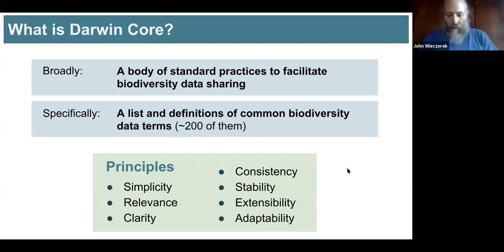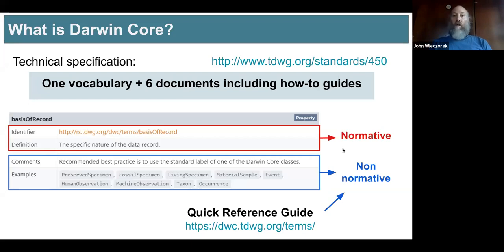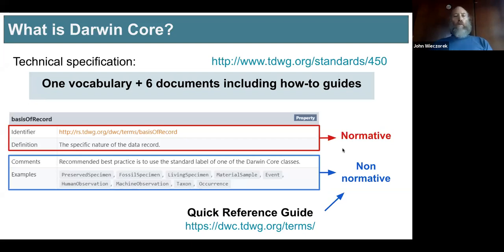The Darwin Core standard consists of normative parts — that is the law, what Darwin Core actually says — and then there are the non-normative parts, which are the commentaries around that. One of the major changes in the last couple of years was that we took the comments and examples out of the normative part of the standard and left only the identifiers, definitions, and a few other metadata items as the normative parts. The reason is that comments and examples are the parts that change all the time, and in order to keep the stability of Darwin Core without having to change the entire standard just to add an example, we have those parts separated.